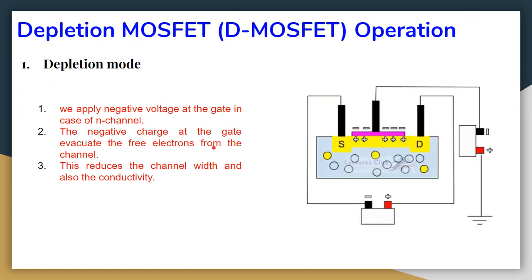The depletion MOSFET works in two modes: depletion mode and enhancement mode. In the depletion mode of an N-channel D-MOSFET, we apply a potential difference between the drain and the source with the load at the drain. To operate in depletion mode, we apply a negative voltage at the gate. The negative charges at the gate repel the electrons already present in the built-in channel.